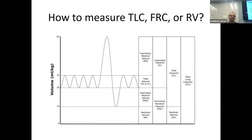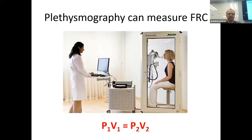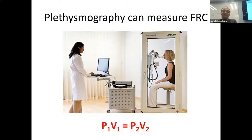We can measure inspiratory reserve volume, tidal volume, and expiratory reserve volume from spirometry. To get the mystery residual volume and calculate total lung capacity for diagnosing restrictive lung disease, plethysmography can measure functional residual capacity, which you can then combine with spirometry measurements to get total lung capacity. This is based on Boyle's Law: pressure at an initial volume equals the different pressure at a different volume in a closed system.